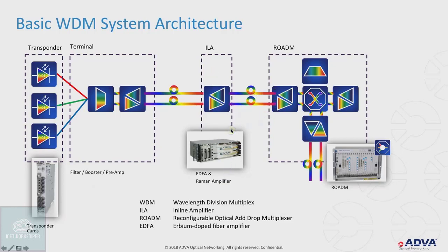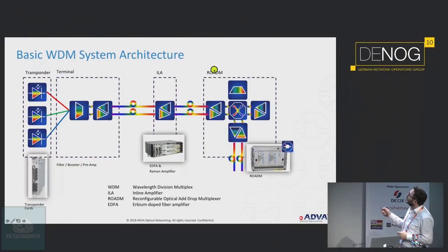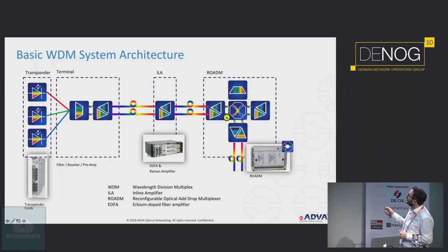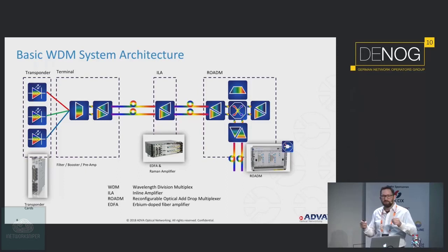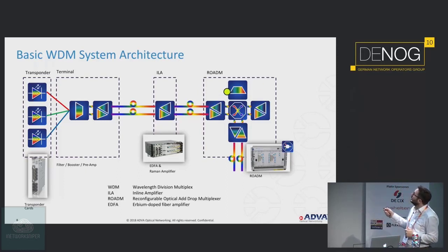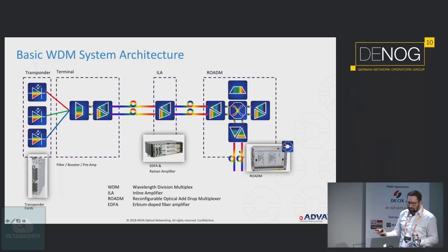If you have a mesh network — not just point-to-point connectivity but real mesh connectivity — you need reconfigurable optical add-drop multiplexers, which have amplifiers at ingress and egress. What appears as a simple cross-connect is actually built from several different modules cabled via fibers in a modular structure, where you can have local add-drop or routing to other outgoing directions.